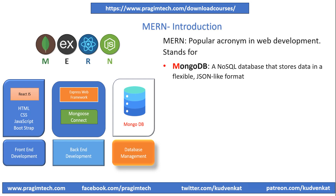MongoDB is a NoSQL database that stores data in a flexible JSON-like format. It is well suited for handling large volumes of data and is highly scalable. From MongoDB, the alphabet M is taken for MERN.